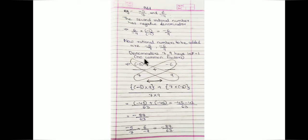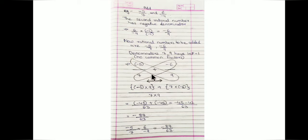The denominators are different, so we use the cross-multiplication method. Write the first rational number minus 5/7 and the second rational number minus 6/9, then multiply: minus 5 times 9 plus 7 times minus 6 over 7 times 9 — that is, (ad plus bc) upon bd. You can remember this as the butterfly method.